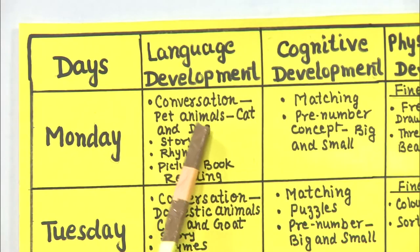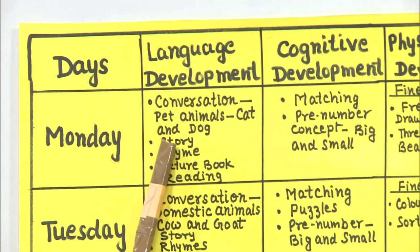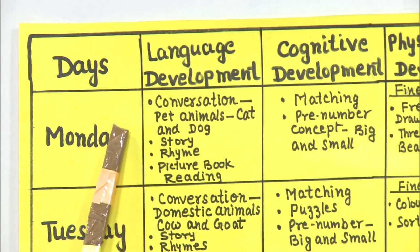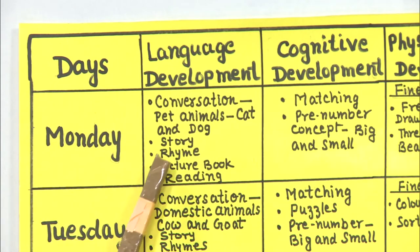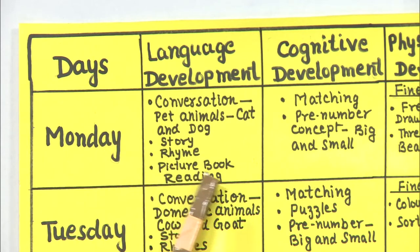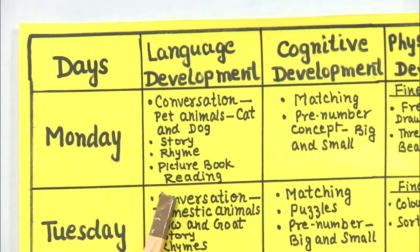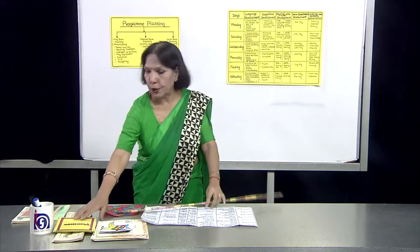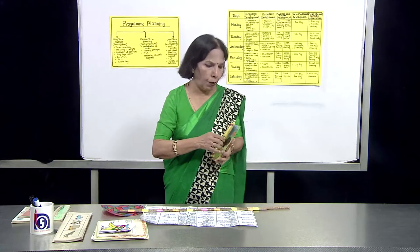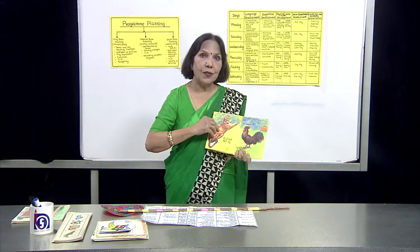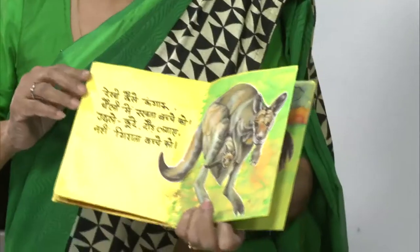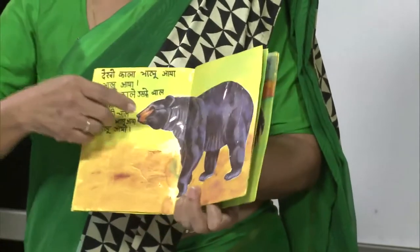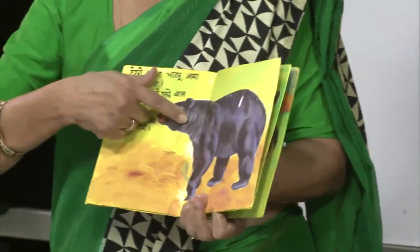The discussion will be on cat and dog. Then there will be one story related to animals, one rhyme related to animals, and picture book reading. Children can read the pictures from this type of picture book.